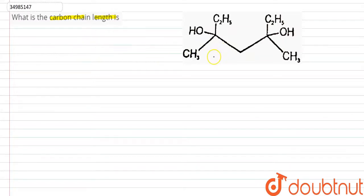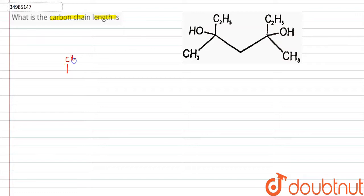So, in this compound the longest carbon chain — first of all, we have to draw the diagram. It is CH2, this is CH3, and here is CH3.